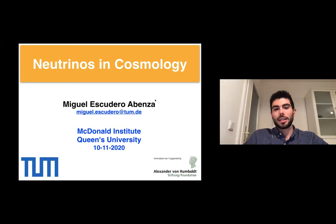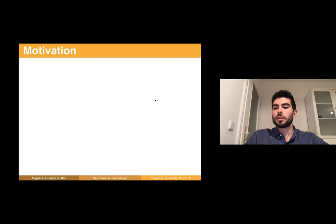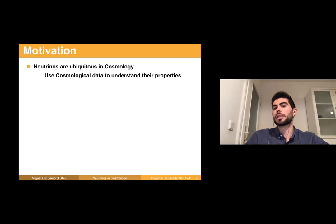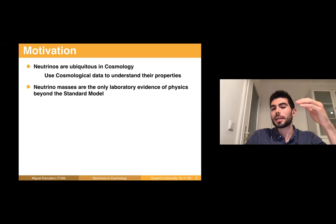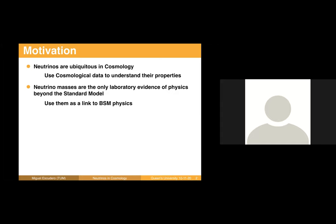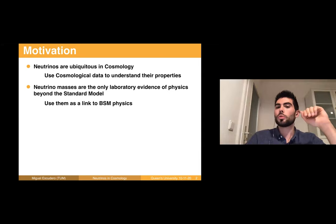The motivation for this talk is very simple. On the one hand, we know that neutrinos are ubiquitous in cosmology, and this is very good because we can use the very precise cosmological data we have at hand to understand their properties. At the same time, from the theory side, we know that neutrinos are the only laboratory evidence of physics beyond the standard model. Therefore, we can use their cosmological implications potentially as a link to physics beyond the standard model.